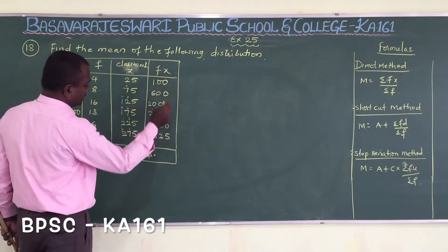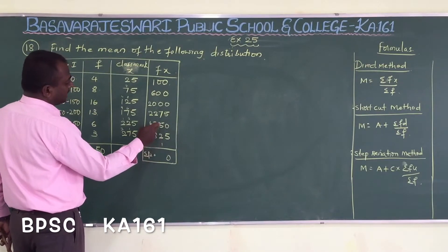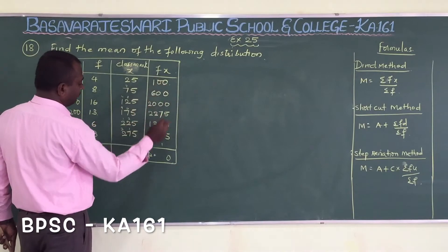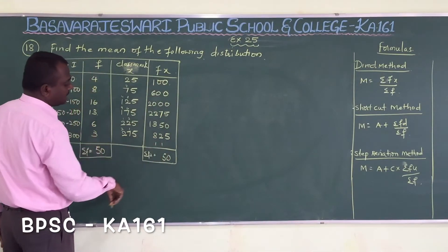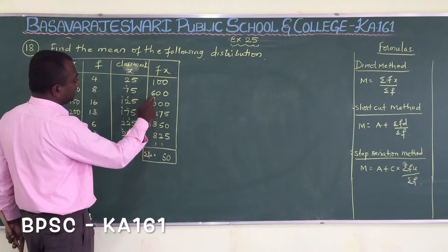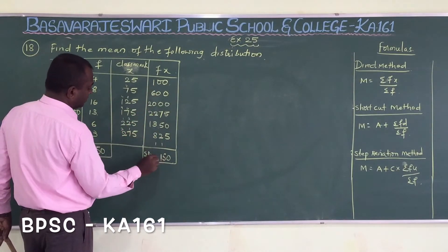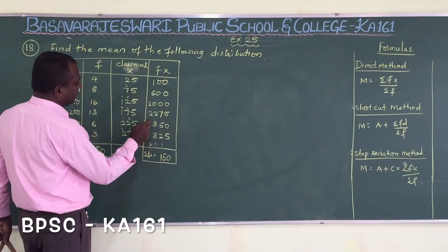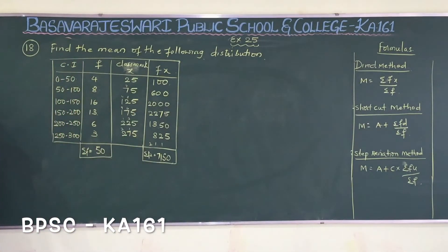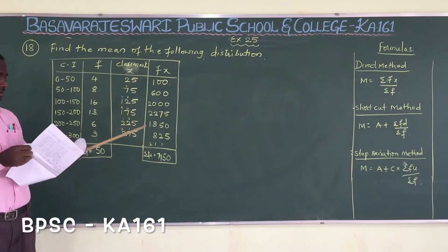Now we also add the fx column. Adding: 5, 10, 5, 3, 8, 15, then 9, 12, 14, 14 + 6 = 20, 20 + 1 = 21, then 2 + 1 = 3, 5, 7. The total sigma fx comes out to 7150.